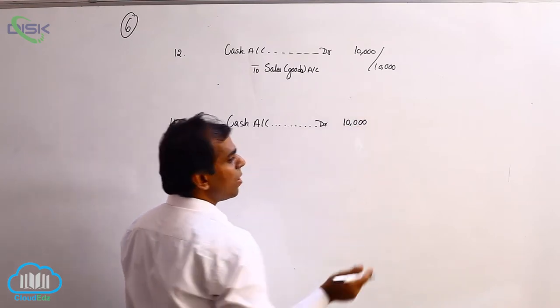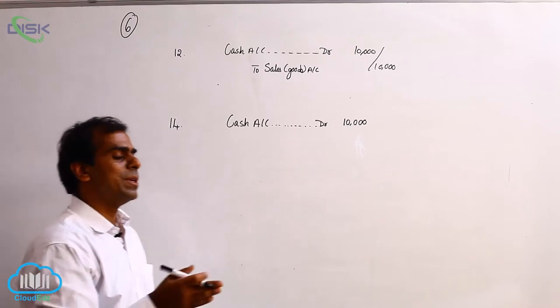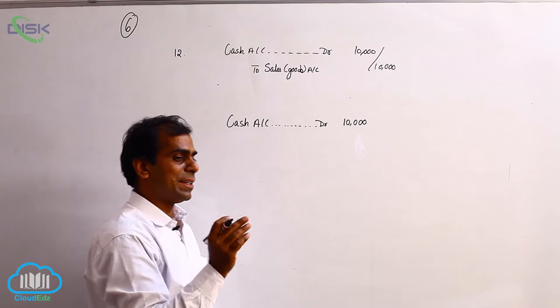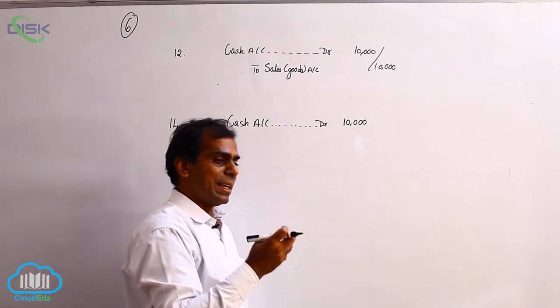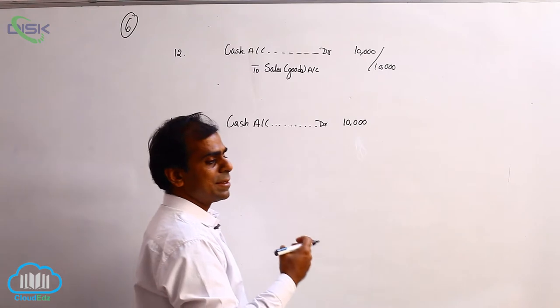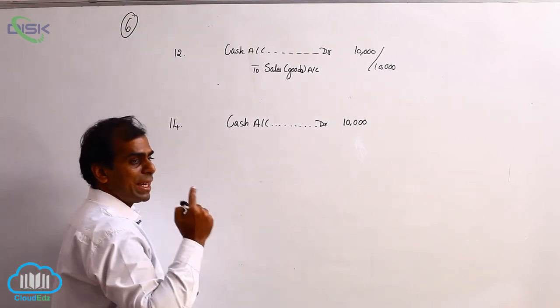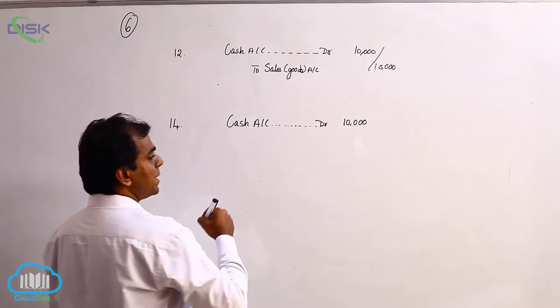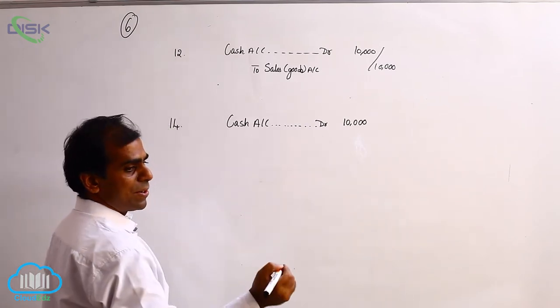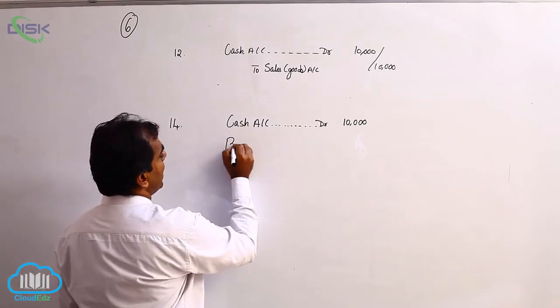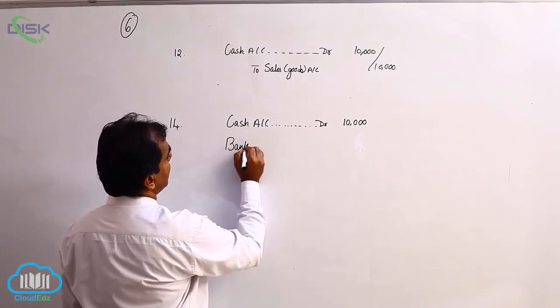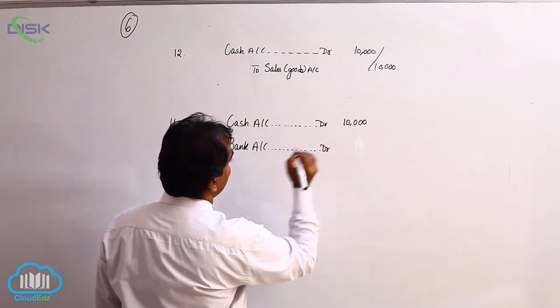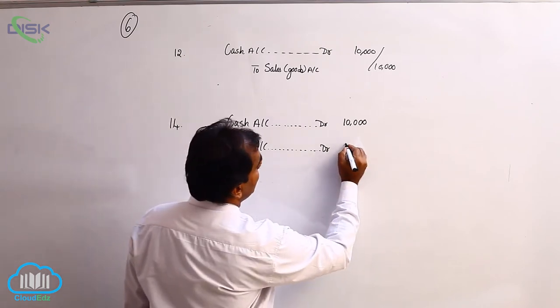You are also getting a check. You will later deposit this check in the bank, and the bank will collect your money. Bank is the receiver of your money. Bank being a personal account receiving money, we apply the rule debit the receiver. Hence we are debiting bank because it will ultimately collect the money on our behalf - temporarily it is the receiver of our money.